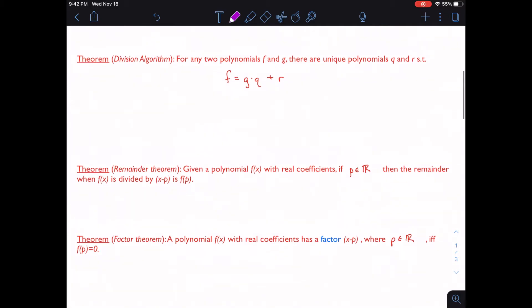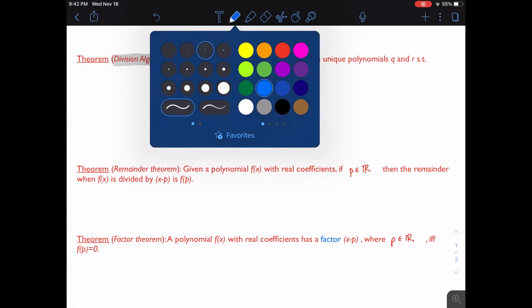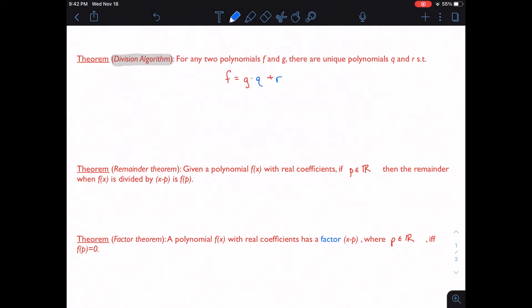Kind of moving on from that. If we want to talk about division, we should define what division is. And we have something called this division algorithm. And this is to say for any two polynomials f and g, we have other unique polynomials. And we're going to call them q and r. And maybe I'll actually color code them so they stick out a little bit better. Such that f can be written as the product of g times q plus r. But why did I pick q and r? Well, that's because I have a quotient and a remainder.